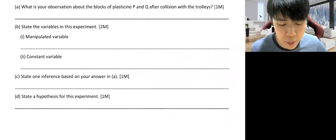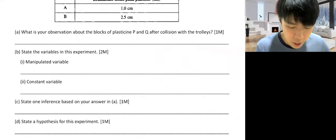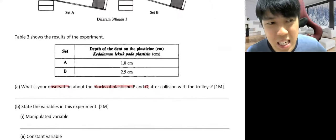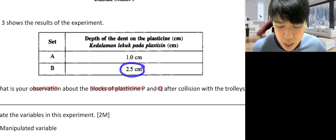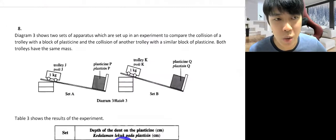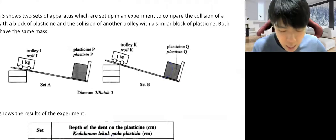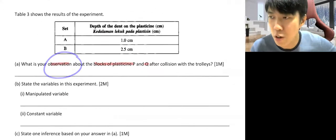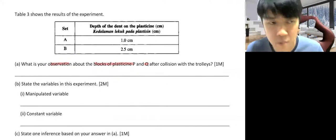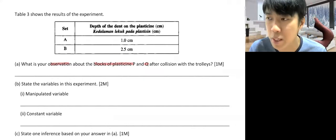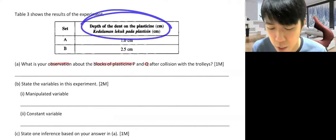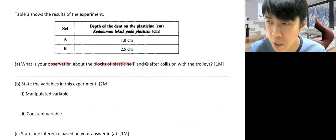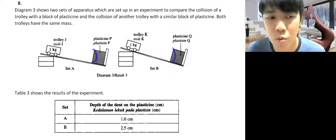Everything here relies on your manipulated and responding variables. Question 8 asks: what is your observation on the block of plasticine P and Q? That means what do you see? The numbers are already given, so B is going to be deeper and A is going to be shallower. You need to write down your observations comparing the depth of dent for P and Q. Try forming your own sentence — just mention which one is deeper than the other.